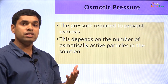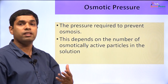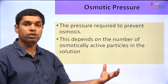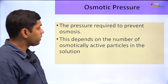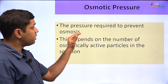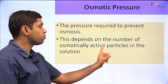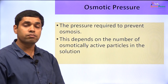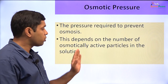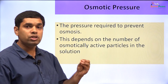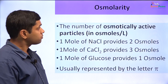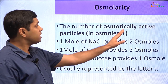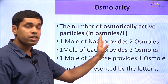Osmotic pressure can be simply defined as the pressure that is required to prevent osmosis. Osmosis is the movement of water molecules from a region of higher water molecules — a more dilute solution — to a region of lesser water molecules — a more concentrated solution. The osmotic pressure is dependent on the number of osmotically active particles in the solution. Therefore, we introduce the term osmolarity: the number of osmotically active particles in osmoles per liter.